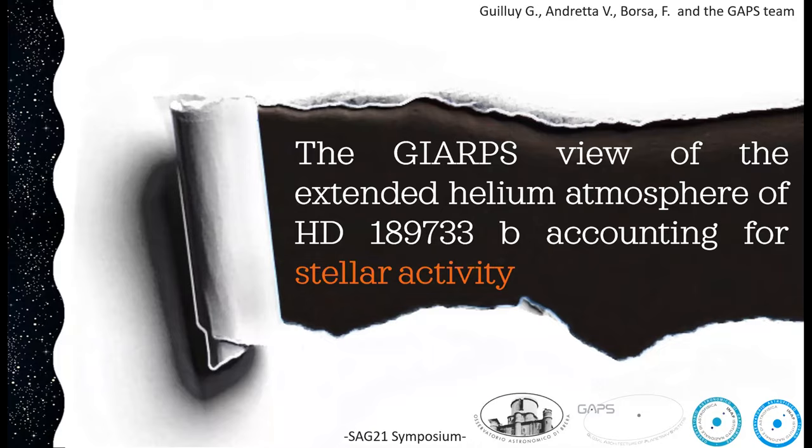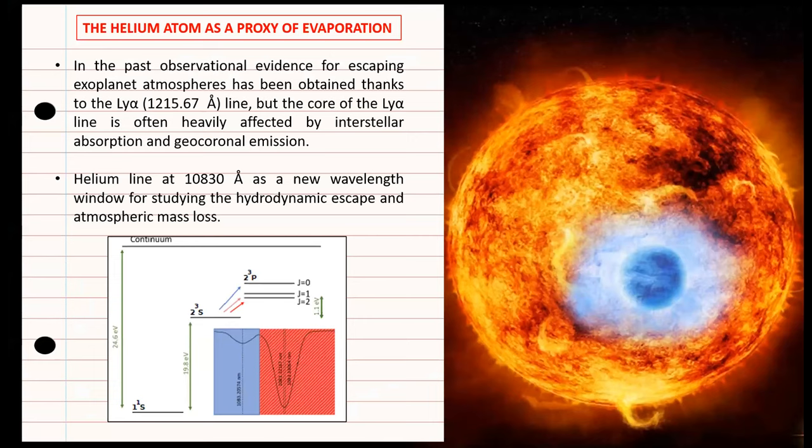Planets orbiting very close to their host stars are strongly irradiated, so their upper layers can expand and in some cases evaporate into space. For many years, the Lyman-alpha line has been used as a diagnostic to probe these upper layers, but the Lyman-alpha line is heavily affected by interstellar absorption and sometimes by geocoronal emission.